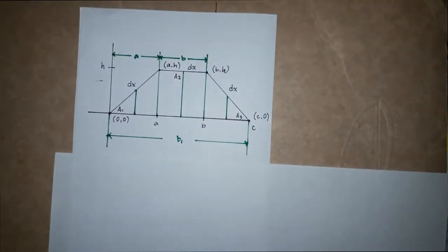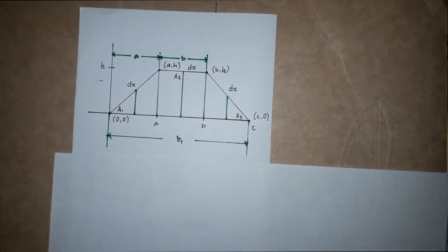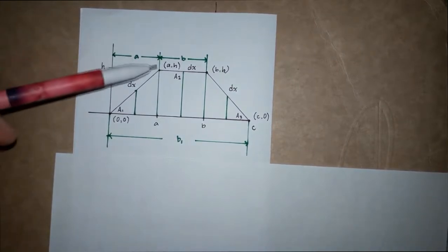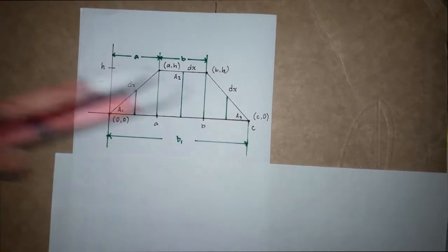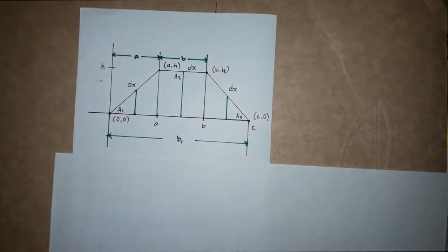Hey guys, welcome to my channel. Today we're going to solve for the formula of the area of a trapezoid using integration. Here we have a trapezoid with the points (0, 0), (a, h), (b, h), and (c, 0).